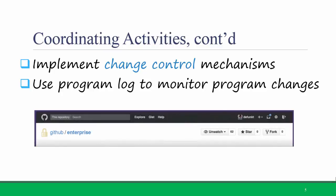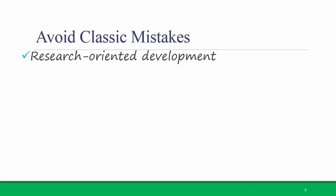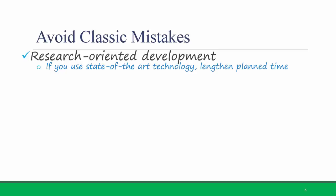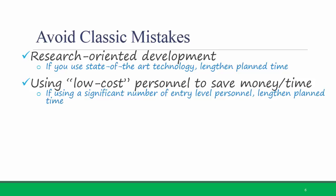You can find out more about control mechanisms and program logs by visiting the Wikipedia page linked here. Here are some classic project management mistakes that occur during the programming process that you should try to avoid. First, use research-oriented development — that means if you're using new, state-of-the-art technology, lengthen the planned time it will take to implement it, as new technologies have less documentation and so there can be more surprises or misunderstandings. A second classic mistake to avoid is using low-cost personnel to save time and money. Experienced programmers can complete as much as 5 to 8 times as much code in the same amount of time as new programmers, but they often only cost about double the rate of entry-level programmers to employ. If you do decide to use a significant number of entry-level personnel, lengthen the planned amount of time that it will take to complete the project.